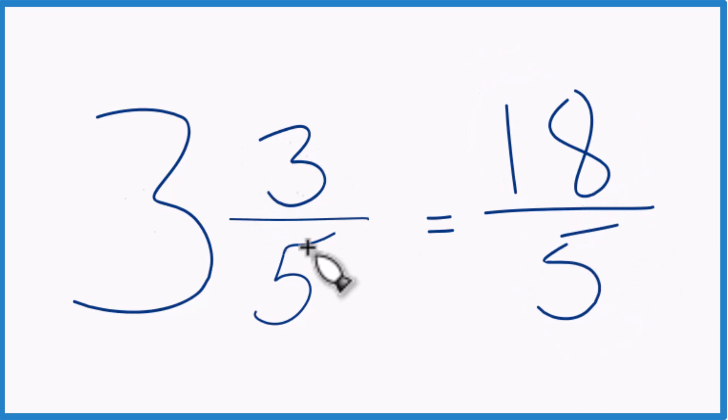And these are equivalent. 3 and 3 fifths equals 18 fifths. They have the same value. It's just different representations.